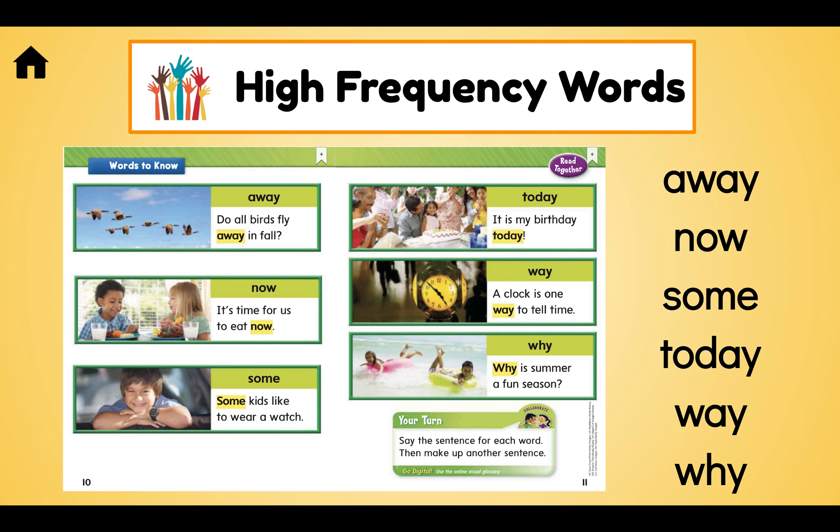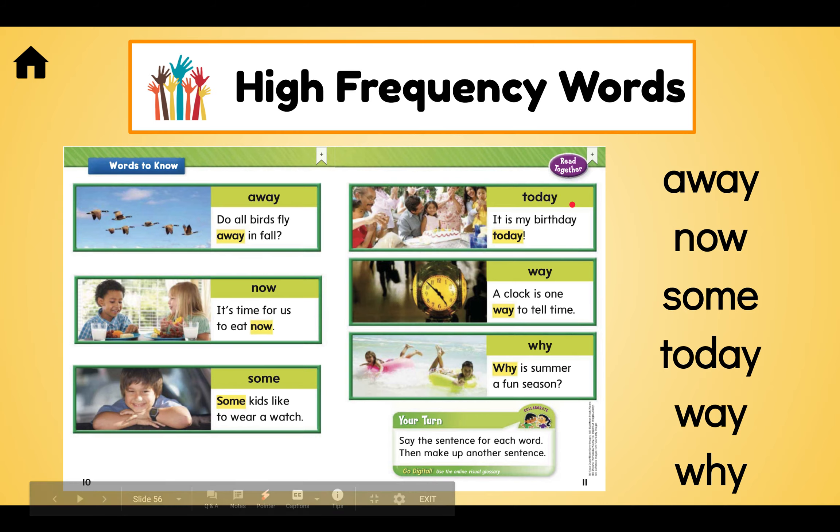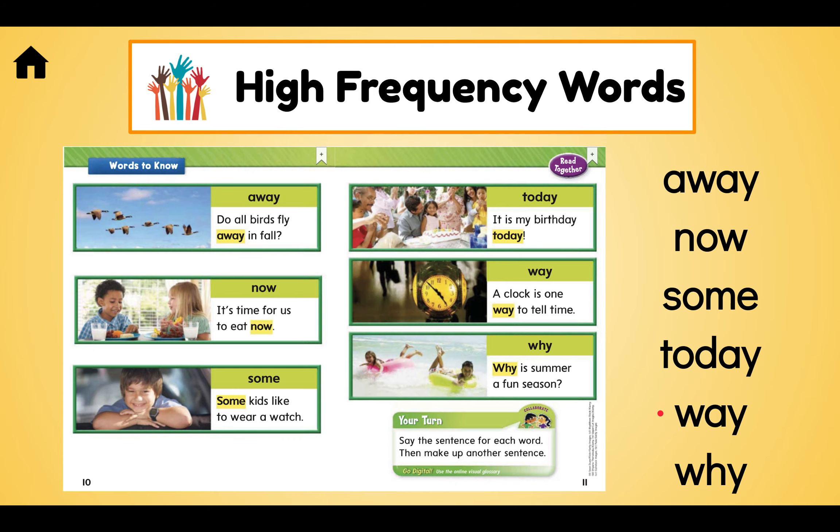That's right! We have our high-frequency words, our words to know, that we need to be able to write and read. Away! Do all the birds fly away in fall? Now! It's time for us to eat now! Some! Some kids like to wear a watch! Today! It is my birthday today! Way! A clock is one way to tell time! Why! Why is the summer a fun season? Pause the video here, and try and make a sentence using the word way. Tell it to a partner! Great work! I can't wait to hear your sentences!